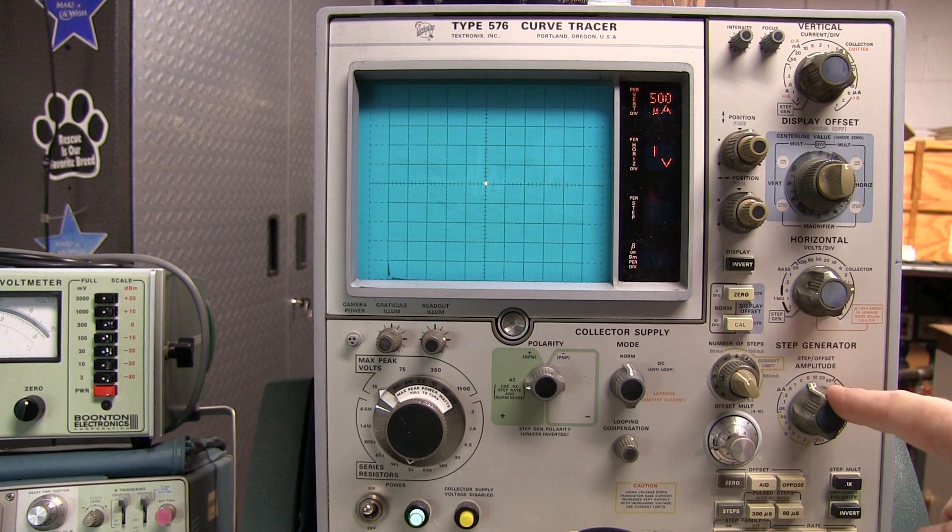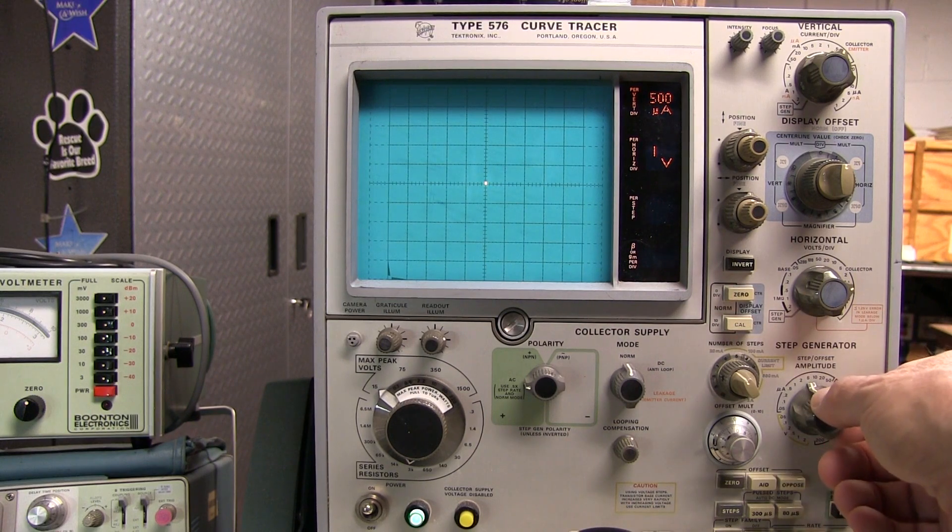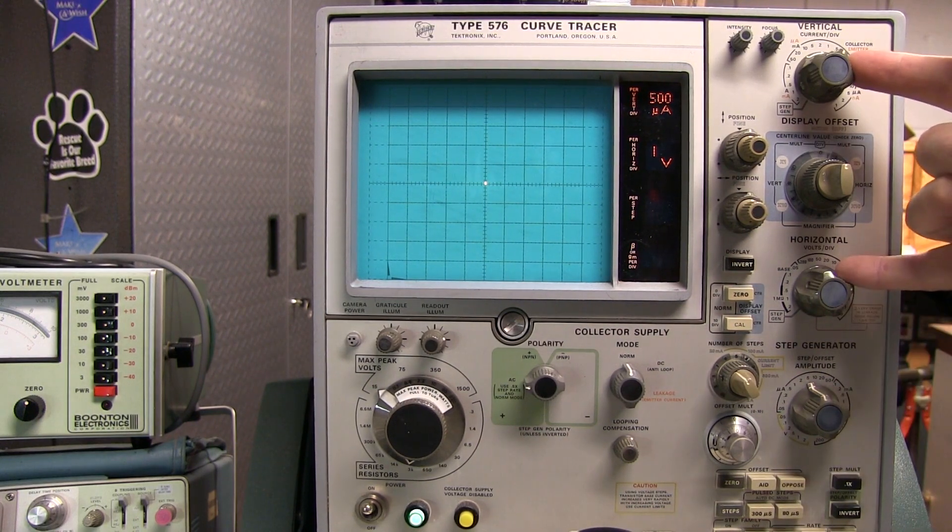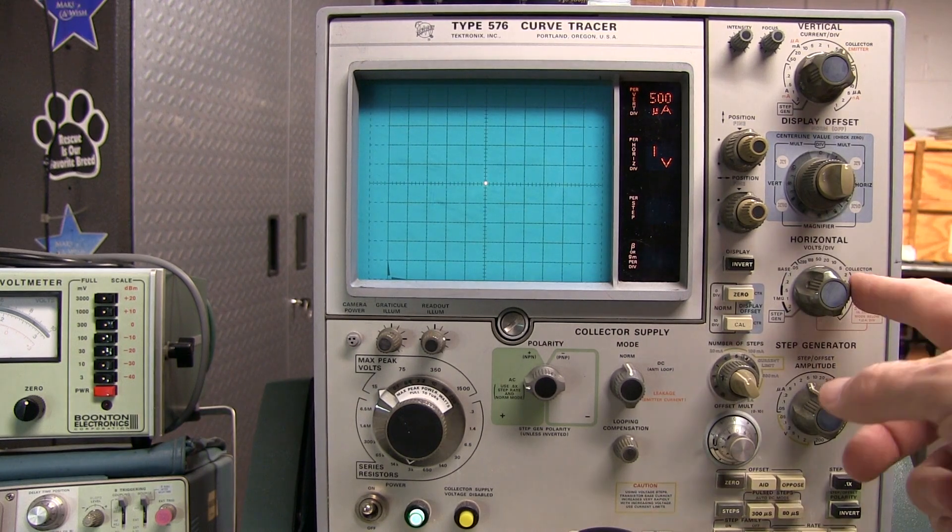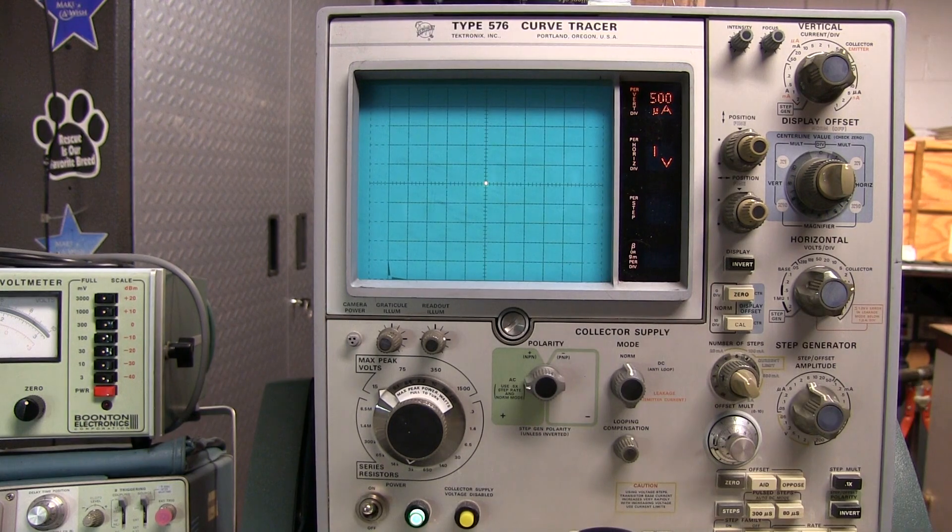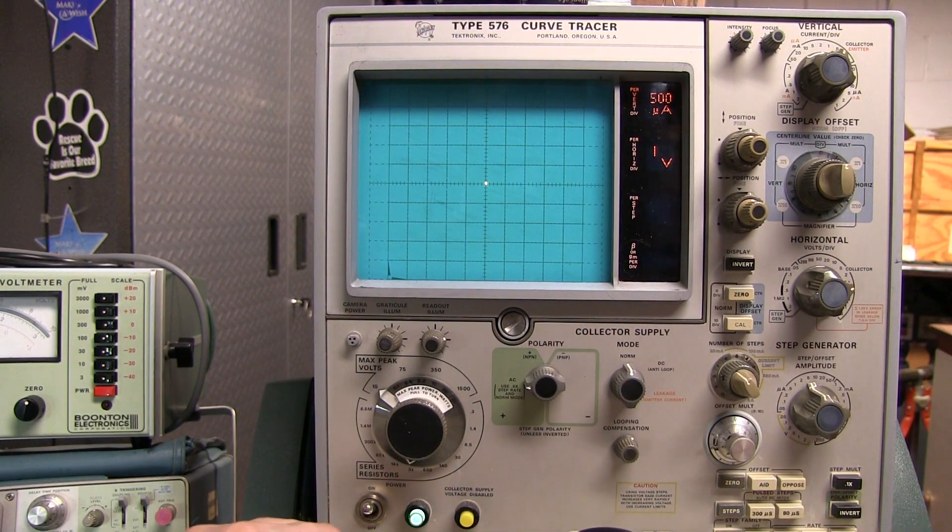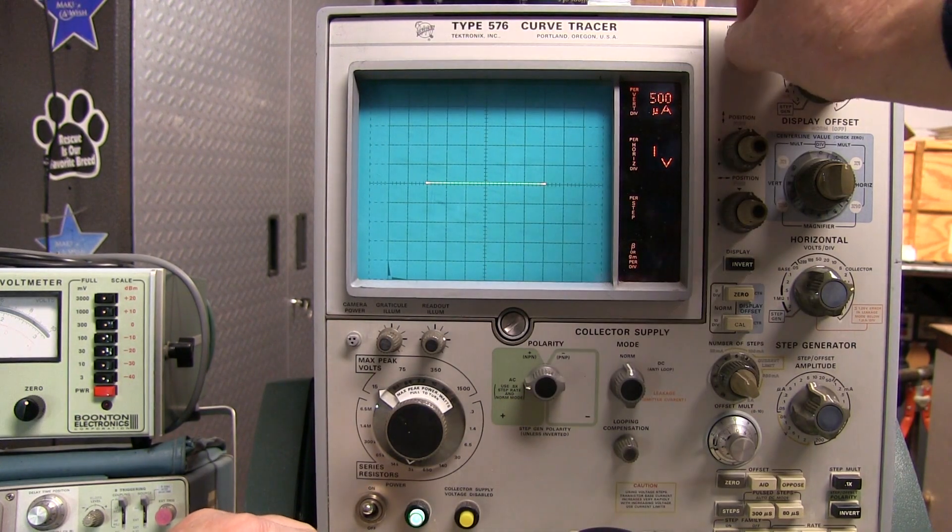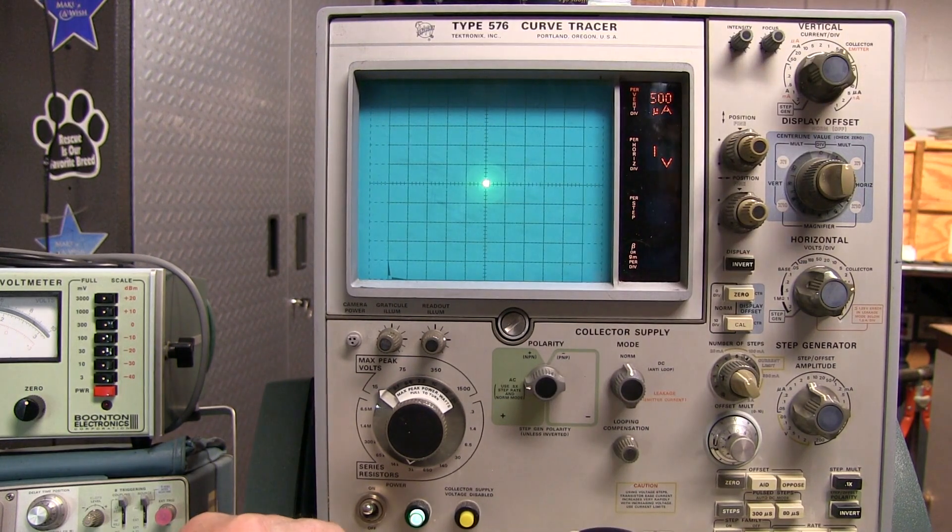Now we're not using the step generator, so that control really doesn't matter. So we just want to concern ourselves with the horizontal and vertical controls. The horizontal control will determine how many volts per division we're going to display horizontally. And as we see, if I swing my voltage up, we can see that trace going across the screen there now.